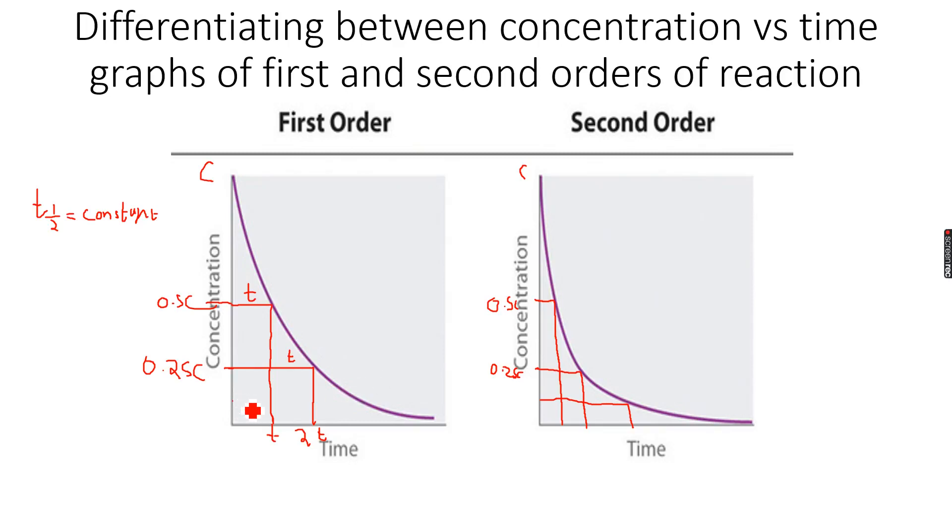But if we half this again, this width, which is basically from here to here, it remains the same. So this is same, from here to here it is same, and from here to here it is same. But as you can see, this is very small, this is a little bigger, and this is much bigger.